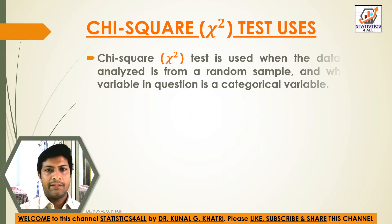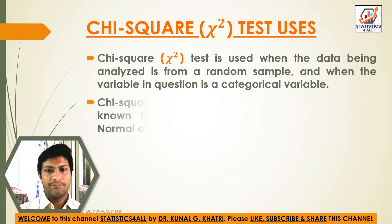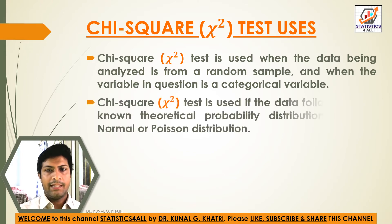The chi-square test is used when the data being analyzed is from a random sample and when the variable in question is a categorical variable. It is also used if the data follows a well-known theoretical probability distribution.